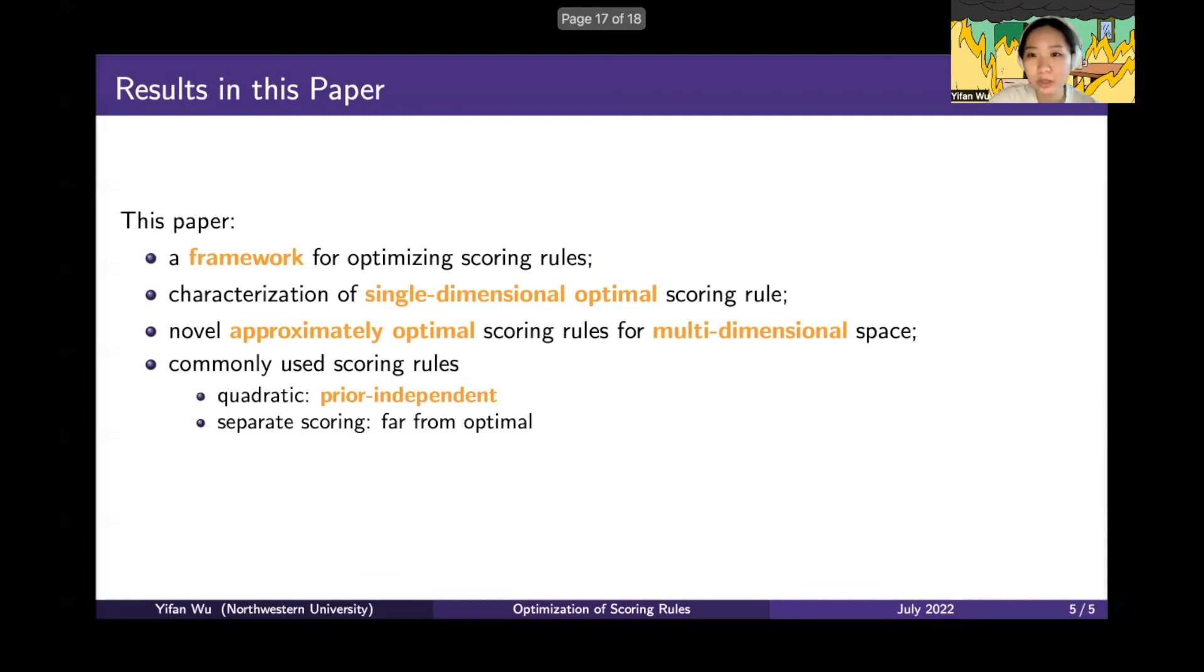However, we also show the quadratic scoring rule is prior independent optimal. We also have a sample complexity result for designing the scoring rule.